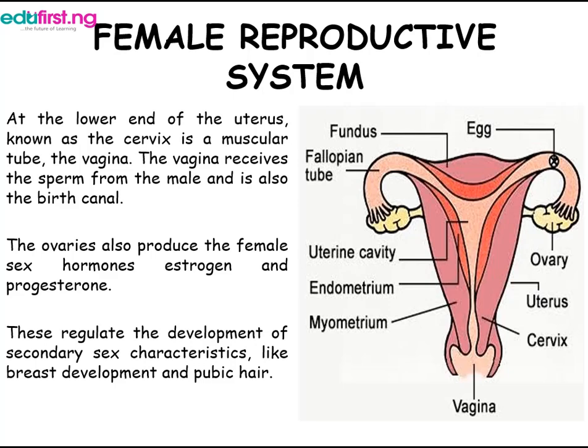Ovaries produce eggs in tiny cavities called follicles. The egg cell is transported through an oviduct, or fallopian tube, to the uterus. At the lower end of the uterus, known as the cervix, is a muscular tube — the vagina. The vagina receives the sperm from the male and is also the birth canal.